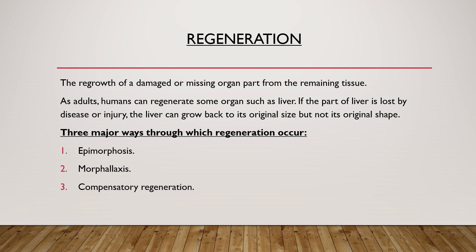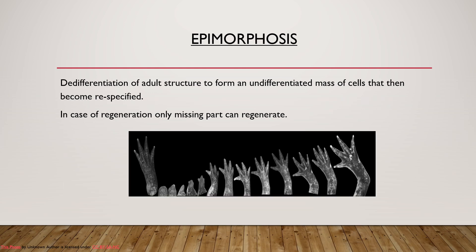There are three major ways through which regeneration occurs: first is epimorphosis, second is morpholaxis, and third is compensatory regeneration. We will talk about each one by one. The first type of regeneration is epimorphosis.